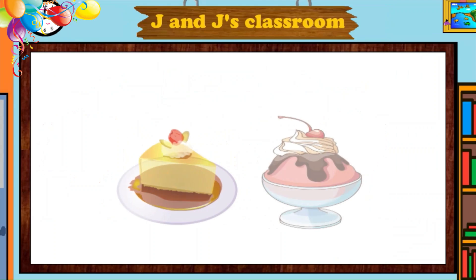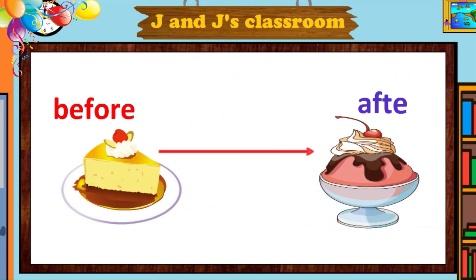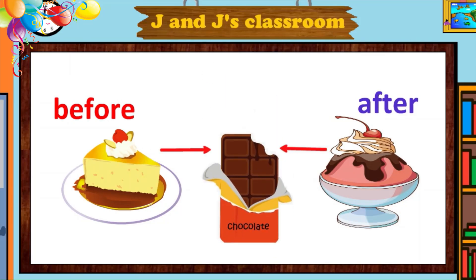A cake is before the ice cream. An ice cream is after the cake. But the chocolate is between cake and ice cream.